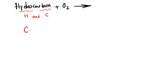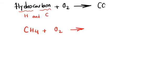Take this example: CH4 plus O2. This is the reaction of methane — the simplest hydrocarbon — with oxygen. The products of a hydrocarbon combustion reaction are always CO2 and H2O. They also produce heat, but we are going to focus on balancing the equation.